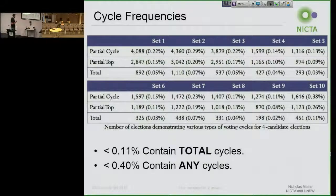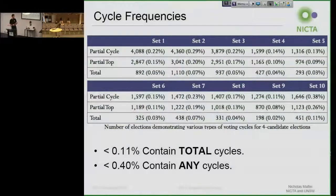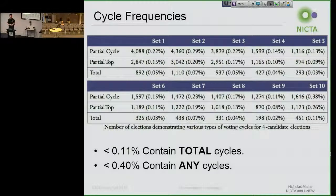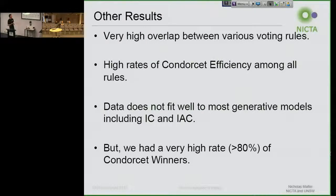We generated orders of magnitude more strict preference profile settings than had been previously studied. We asked all sorts of questions: when do voting rules fall apart, how often do we have these cycles, how often do we have all these strange problems? One thing we found was that we actually don't get these cycle frequencies — where a majority prefer A to B, a majority prefer B to C, and a majority prefer C to A — that happens less than half a percent of the time across multiple cuttings of this dataset. We also got a really high overlap between voting rules and a high incidence of what's called Condorcet efficiency.